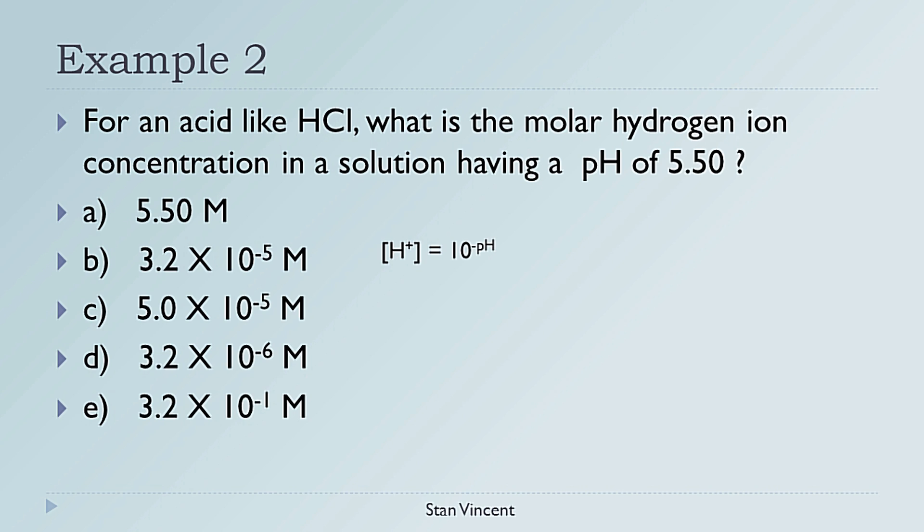The equation to determine the hydrogen ion concentration from the pH value provided is [H+] = 10 to the power of -pH. Substituting the values in the equation, hydrogen ion concentration equals 10 to the power of -5.50, which gives you an answer of 3.2 × 10⁻⁶. This means your correct answer is choice D.